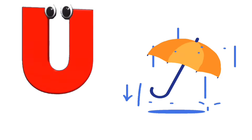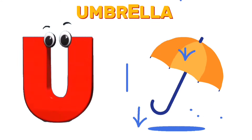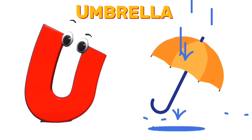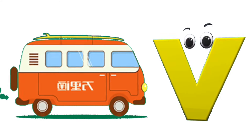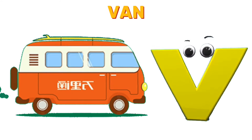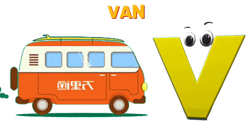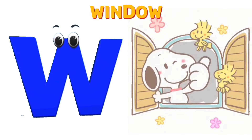U is for umbrella. U, U, umbrella. V is for van. V, V, van.